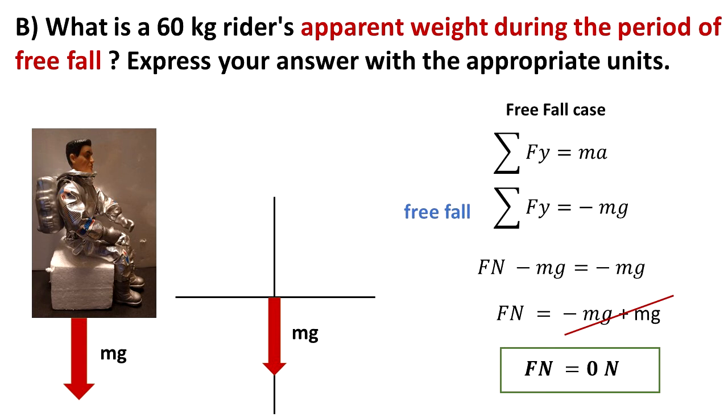That means that for free fall, the normal force is equal to zero newtons. So when the rider is in free fall, he feels as if he was just floating over the surface. The ride and the rider are falling at the same rate.